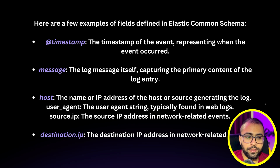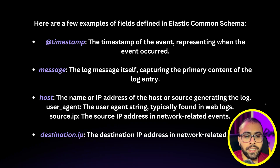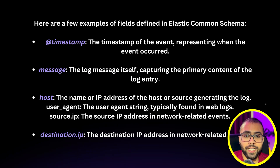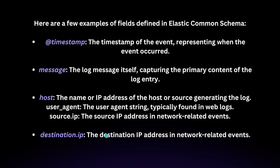Here are a few examples of fields defined in Elastic Common Schema. First, @timestamp — this represents the timestamp of the event, i.e., when the event occurred. Second, message — the log message itself, capturing the primary content of the log entry. Third, host — the name and IP address of the host. Fourth, source.ip and destination.ip — for IP address use cases, Elastic provides these standardized field names to make things easier.